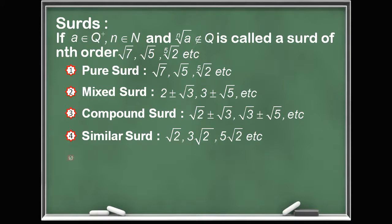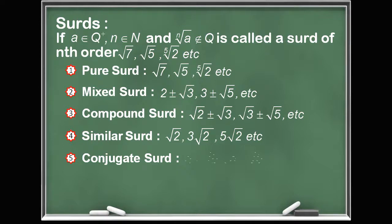The next kind is conjugate surds. If both the sum and the product of two surds is a rational number, then the two surds are called conjugate surds. For example, a + √b and a − √b are conjugate surds.